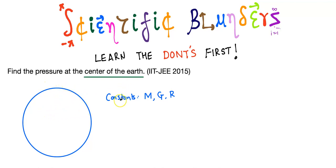We can assume we are given the universal constants: the mass of the Earth, the universal gravitational constant G, and the radius of the Earth R.